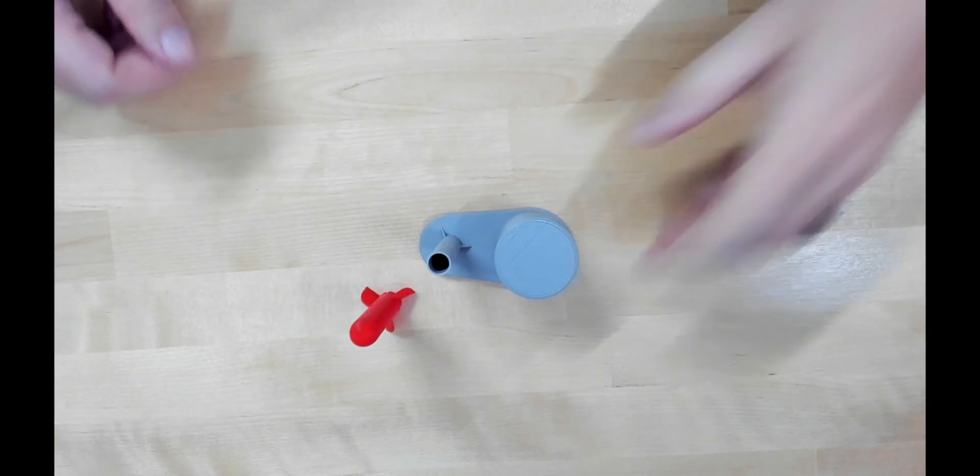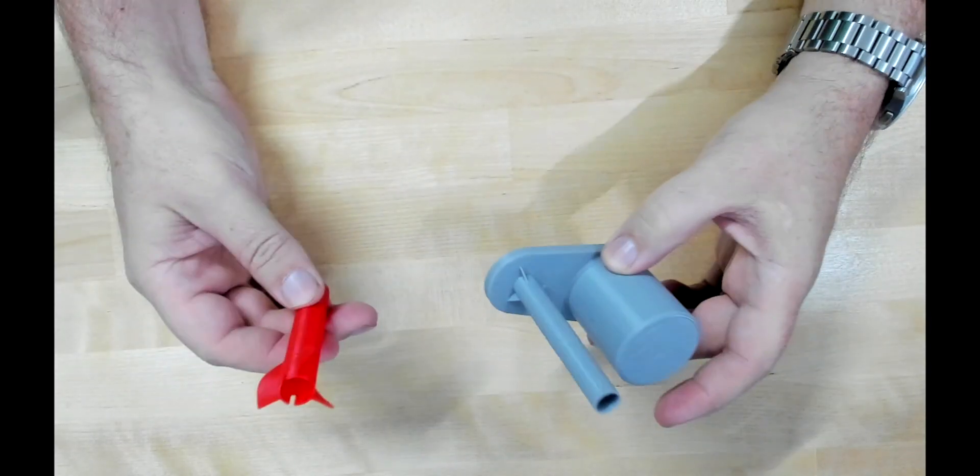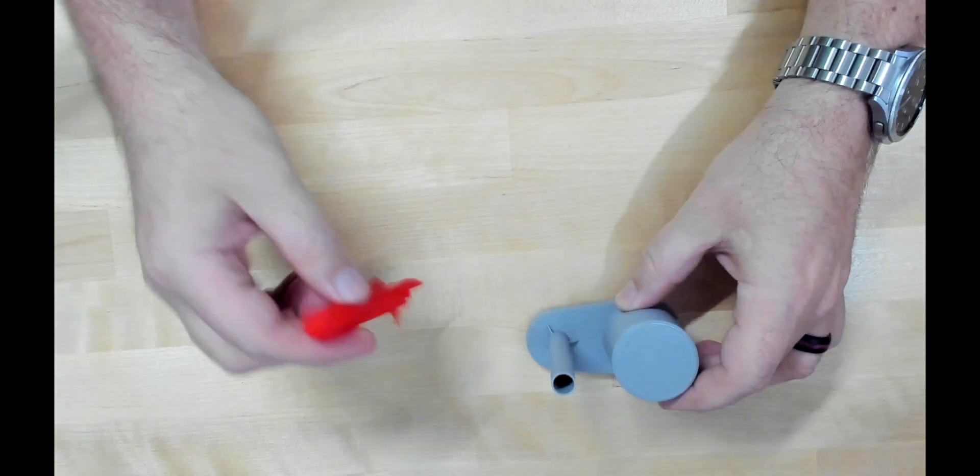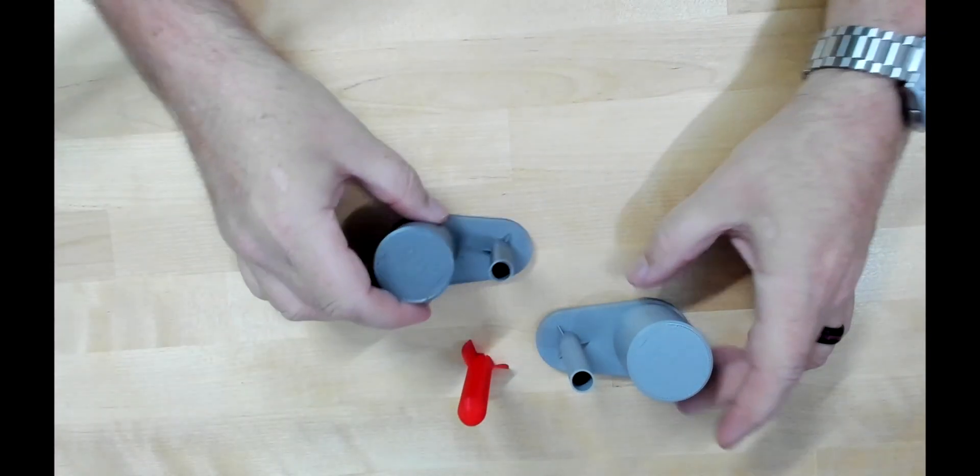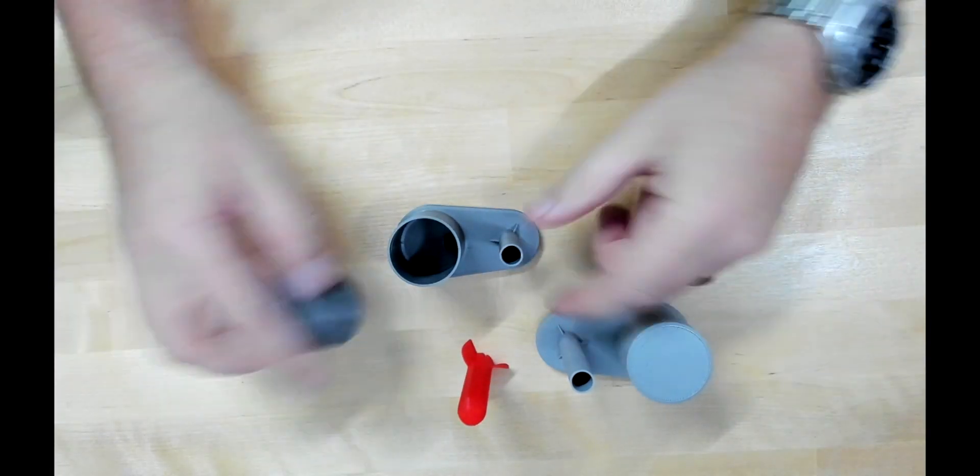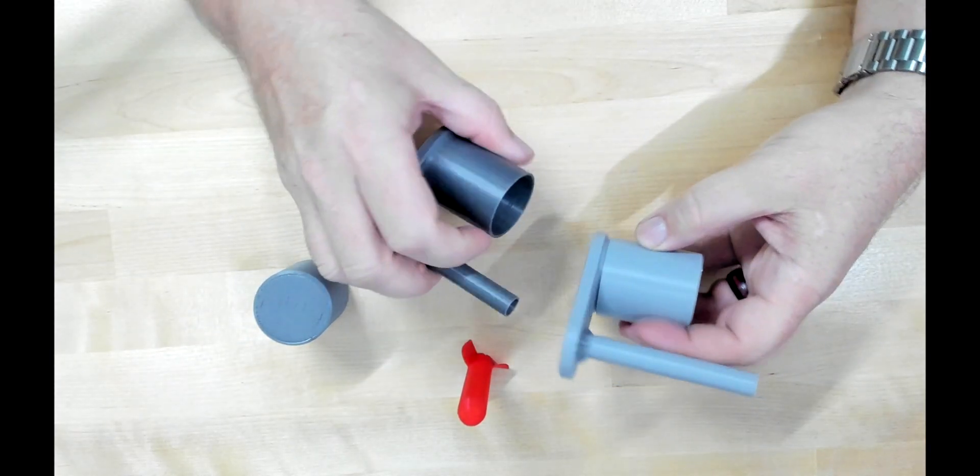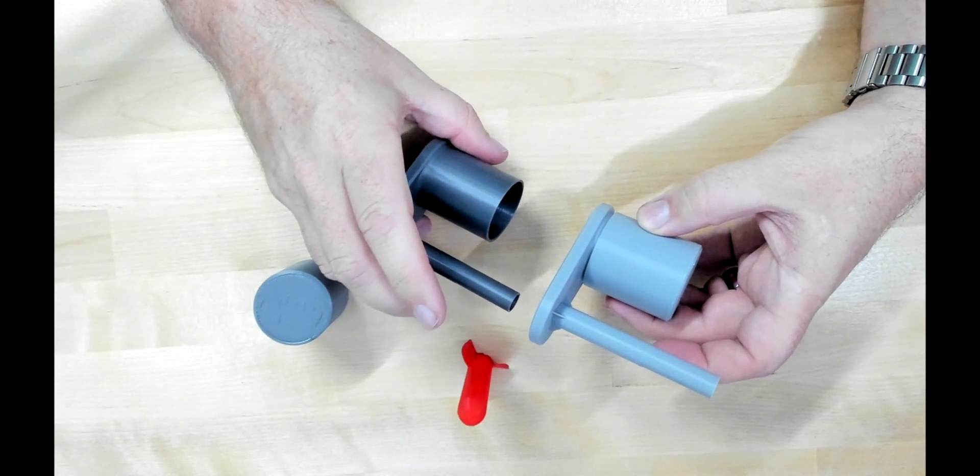So what I decided to do was go ahead and take the same idea, and I figured really all it needed was a little bit more tolerance between the rocket and the actual launcher itself. So I shrunk down the model a little bit by 95% to be exact, and I reprinted it. And you see it's very similar in size, just a little bit smaller, really hard to see almost, but you can kind of tell it's not quite as big.